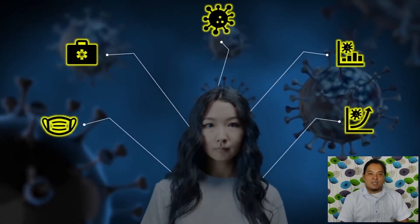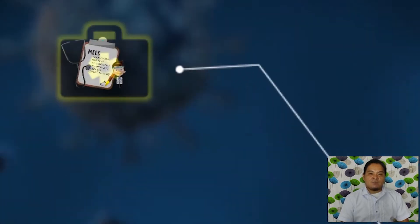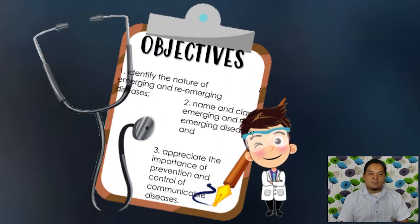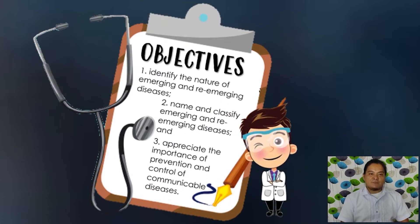For today, our target competency is: Analyze the nature of emerging and re-emerging diseases. And for our learning objectives: 1. Identify the nature of emerging and re-emerging diseases. 2. Name and classify emerging and re-emerging diseases. 3. Appreciate the importance of prevention and control of communicable diseases.